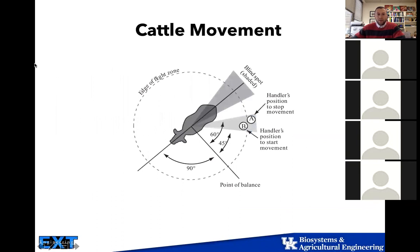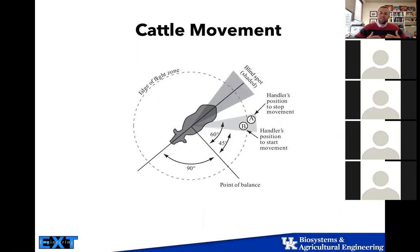Looking at cattle movement, we're going to talk about the flight zone — how we push these animals, moving them from position A to B, having to start and stop their movement just by how we position our body. If we get in front of the shoulder of the animal, we're most likely going to stop them or potentially turn them. If we're standing behind the animal, we're pushing that animal forward. We're trying to take advantage of the natural behaviors of cattle to help us move them.